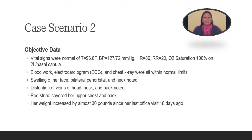Looking at Mrs. G's vital signs, they were all normal. Her blood work, ECG, and chest x-ray were all within normal limits. The swelling of her face, bilateral periorbital and neck were noted. Distention of her veins of her head, neck and back were also noted. She also had red striae that covered her upper chest and back. And she has had an increase in weight of almost 30 pounds since her last office visit 18 days ago.